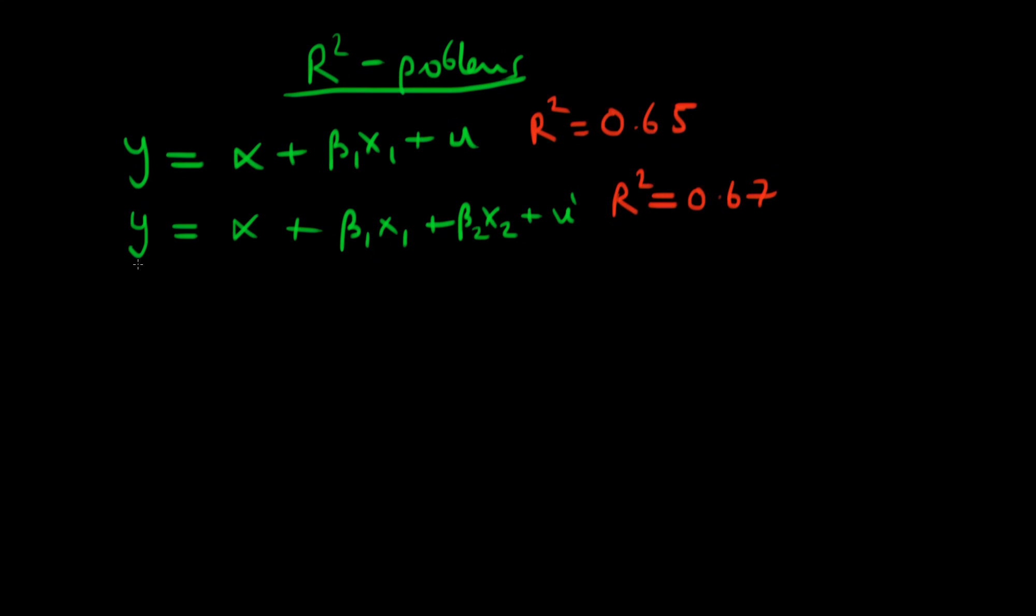But the problem with R squared is if I add arbitrarily more variables, so I have some model which is alpha plus beta 1 X1 plus beta 2 X2, all the way continuing up to beta P XP, then if I have as many regressors as I do degrees of freedom, then my R squared will actually be 1.